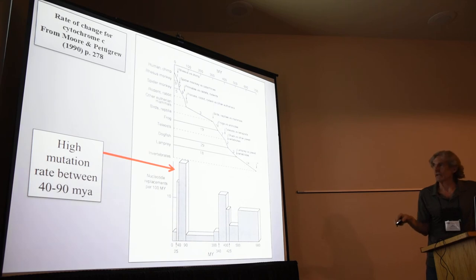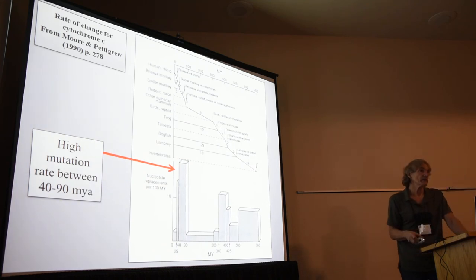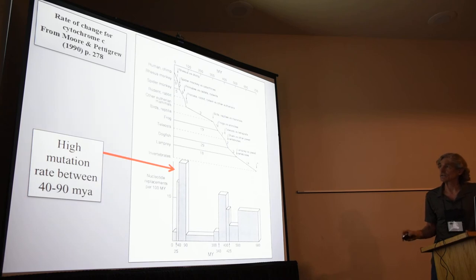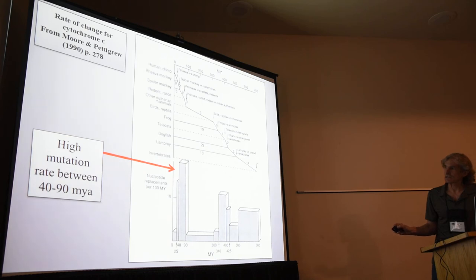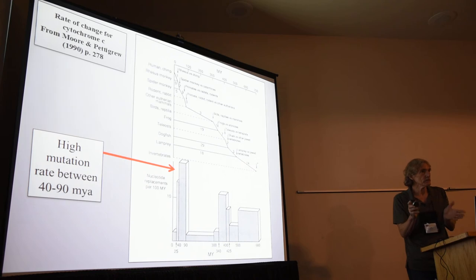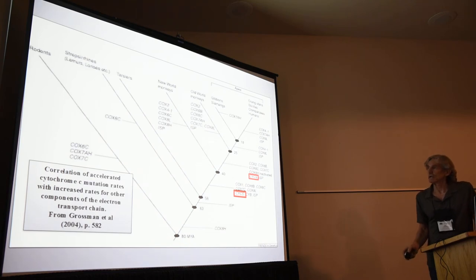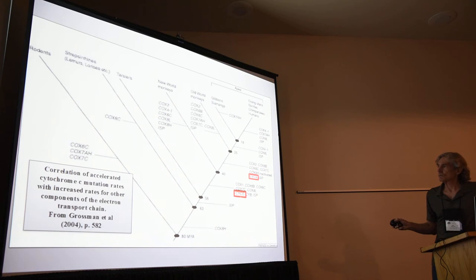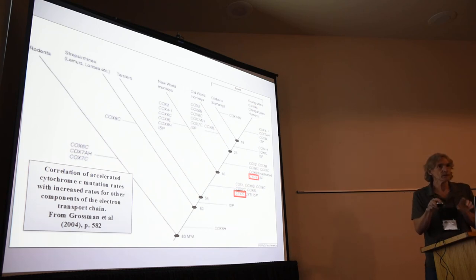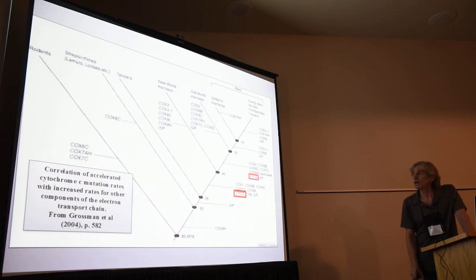It turns out there's quite a long history of looking at changes in cytochrome C mutation rates. Morris Goodman did a lot of this research back in the late 70s and early 80s. By 1990, it was summarized in a long discussion of cytochrome C, in which the substitution rate is highest between 40 and 90 million years ago and only slightly less between 25 and 40 million years ago — exactly the time period we're talking about for the diversification of primates. What Goodman and his group also did was correlate changes in cytochrome C substitution rates with other components of the electron transport chain — the other proteins that interact with cytochrome C to allow phosphorylation — and showed that there are also increases in those rates.